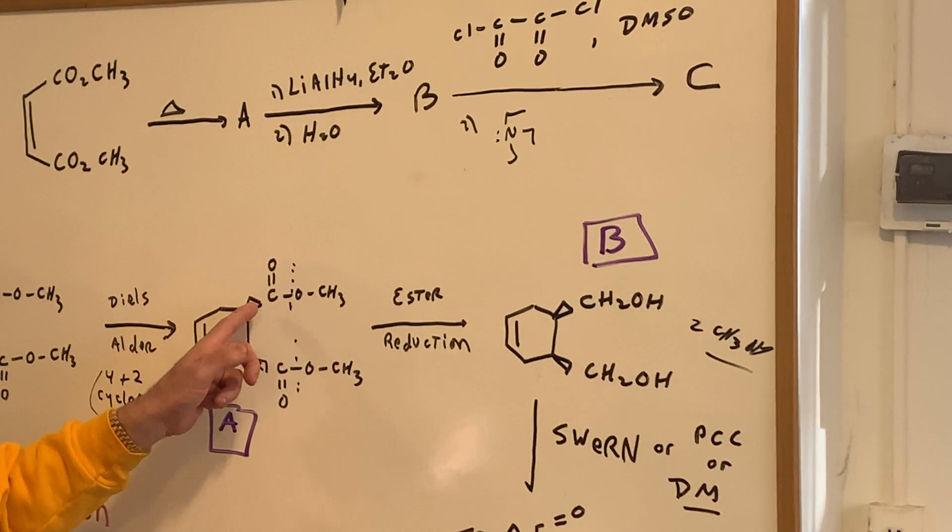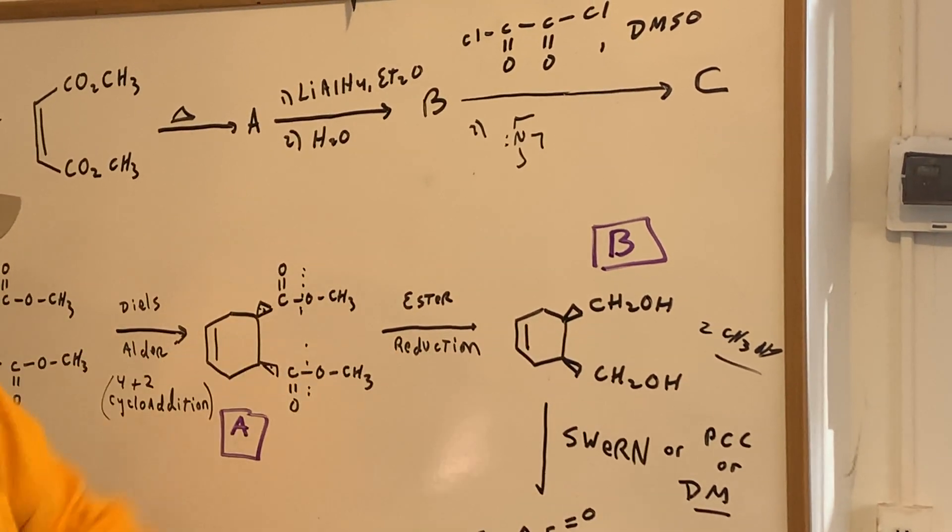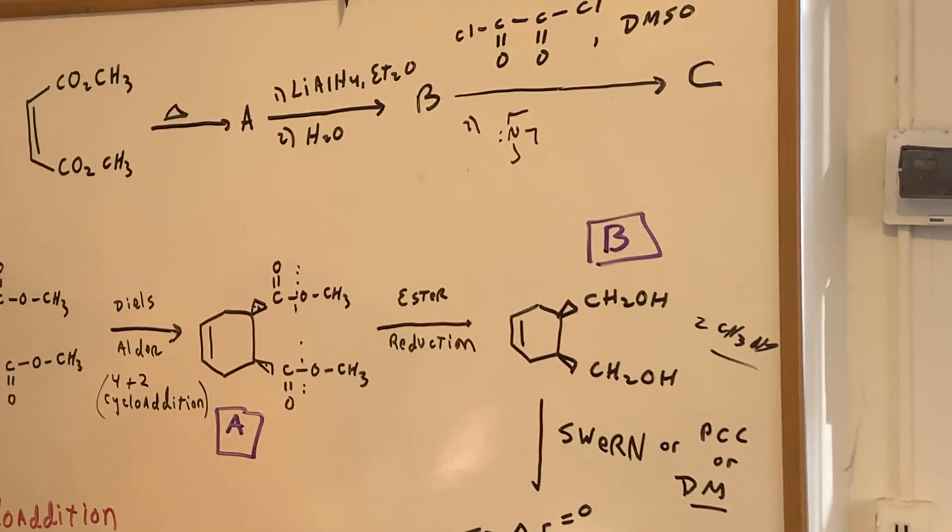So that'll give me two moles of methanol as byproduct. And of course, we're not breaking the chirality, so you keep these as wedges. So we now have two CH2OHs.